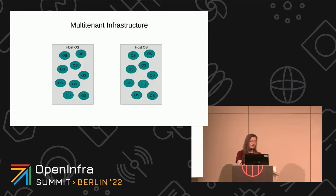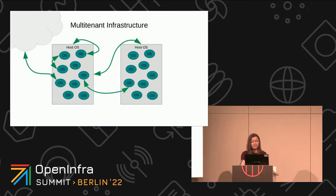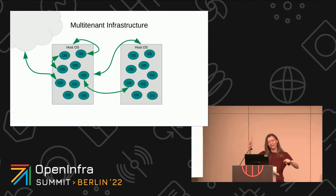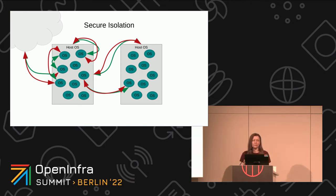My work was specifically focused on cloud and containers — this multi-tenant infrastructure where you have a host OS and a series of guest OSes. VMs or containers, it doesn't matter for this particular domain; the security problems are the same. In this context there are many channels of information flow we want to allow: guests talking to each other, the host talking to guests, connections out to the internet. But for every channel we want to allow, there are channels we don't want to allow. That's where secure isolation comes in — it's about choosing what channels are allowed and what channels are not.